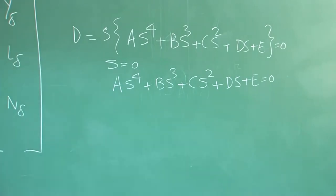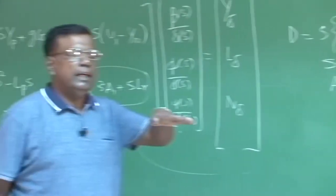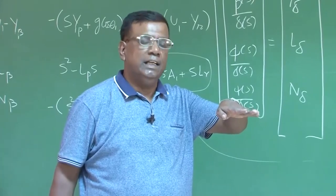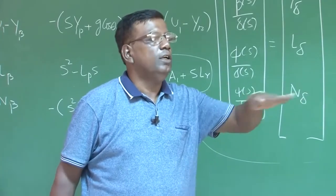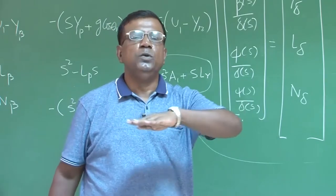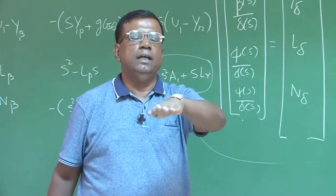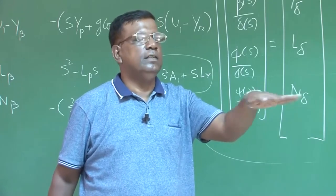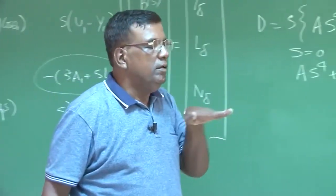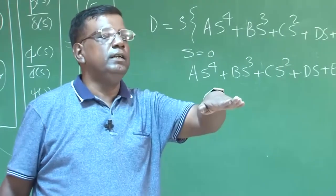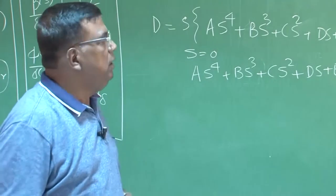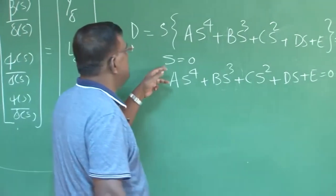S equals zero is the case — it is a lateral directional neutral stability when it refers to psi. See, the airplane can fly heading 2 degrees, 3 degrees, or 4 degrees — aerodynamically they are neutrally stable, no resistance, because for the airplane it is the relative airspeed that matters. So S equals zero suggests that, and we neglect and understand it.